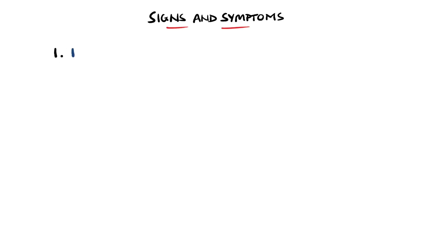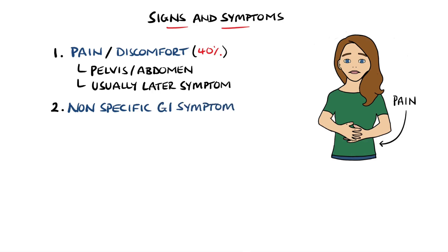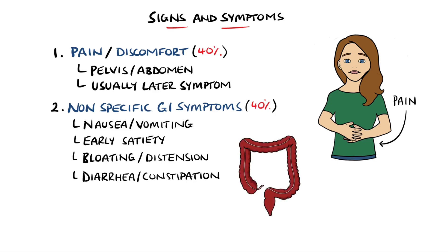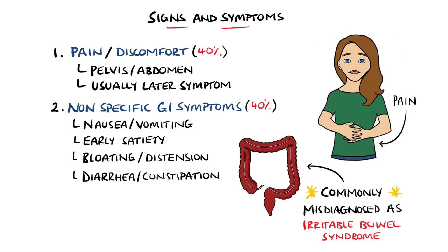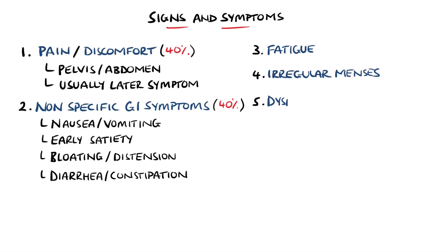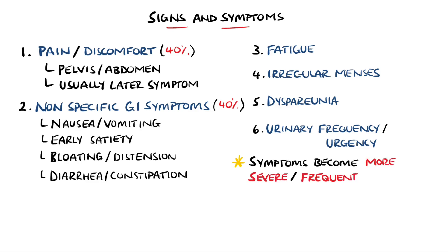The most common symptom is pain or discomfort, usually pelvic or abdominal. However, it is more commonly seen in the later stages. Early symptoms are often nonspecific, subtle, and can lead to a diagnostic delay. These can include nonspecific gastrointestinal symptoms like nausea and vomiting, early satiety, bloating or distension, or diarrhoea and constipation — which is why these patients are often misdiagnosed with irritable bowel syndrome. Fatigue, irregular menstruation, dyspareunia (meaning pain during sexual intercourse), and increased urinary frequency and urgency are also possible. The symptoms often become more severe or frequent as the disease progresses.